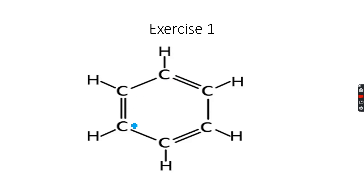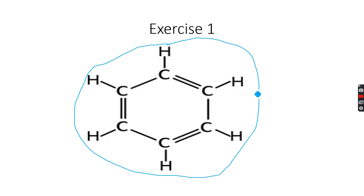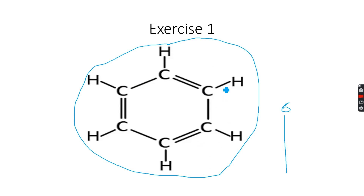This pattern repeats until we complete the cycle, so technically all these carbon atoms are in the same chemical environment, meaning all these hydrogen atoms share the same chemical environment. Therefore, we will have one singlet peak integrated to six, because six hydrogen atoms are contributing. There will be no splitting because these are equivalent proton environments with the same neighbors.